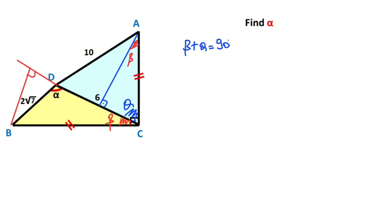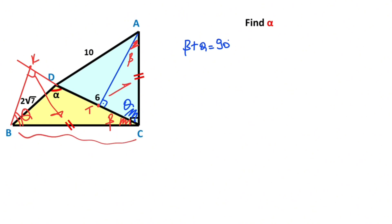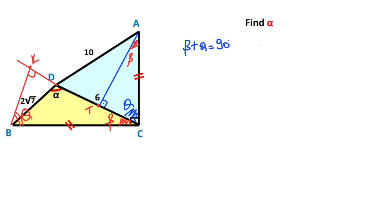Let's call here point K and here point T. If we focus on this triangle, if here is beta, this angle must be equal to theta. That means this triangle and this triangle are congruent. Why? Because these two triangles have the same angles, and the sides opposite the 90 degrees are equal.